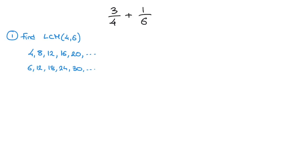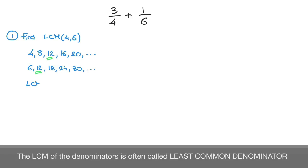We now look for the smallest number both of these lists have in common. Looking at these two lists, it doesn't take us too long to see that the smallest number they have in common is 12. That's the least common multiple of 4 and 6, so we can write LCM of 4 and 6 equals 12. And that's our first step done.